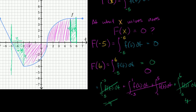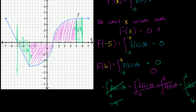Once again, how did I do that? Well, clearly when x is equal to negative 5 you have no area. Then I just kept increasing x to larger and larger values. As we increased x above negative 5, capital F of x became more and more negative. But then we started adding positive area to offset the negative, and we fully offset it at x is equal to 6.